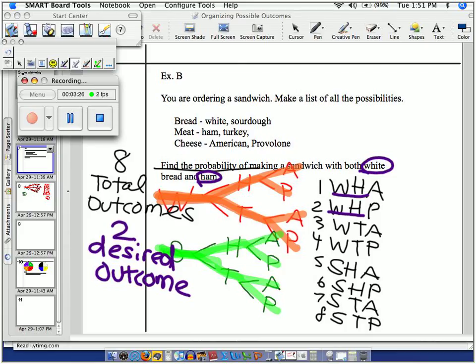The probability of making a white bread sandwich with ham is two out of eight, which is equivalent to the fraction one-fourth. I memorize that as a decimal 0.25, so the percentage is 25%.